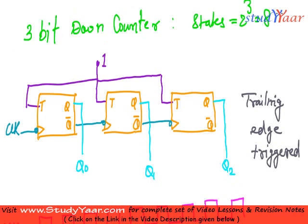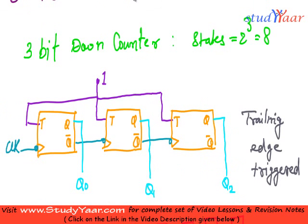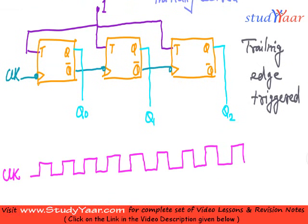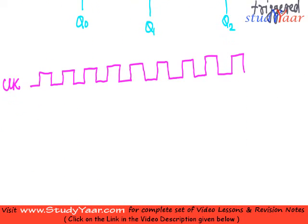So in a trailing edge triggered, what you are going to assume is, your flip-flops are initially cleared. All flip-flops are initially cleared. If you are using a leading edge triggered, then you are going to assume that your flip-flops are initially pre-setted. Pre-setted means they are initially one. That's the only difference. You can use any type of flip-flop that you want. Trailing edge, leading edge, as you like.